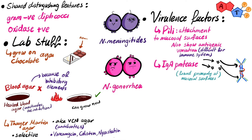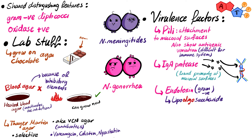Since Neisseria is a gram-negative bacteria, it has the ability to produce endotoxin, but be aware that the Neisseria endotoxin is a little bit different from the original one. It has a lipooligosaccharide instead of the lipopolysaccharide found in other gram-negative bacteria. You can think of it as an alternative version of the lipopolysaccharide found in other gram-negative bacteria.